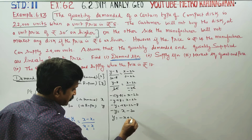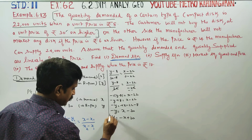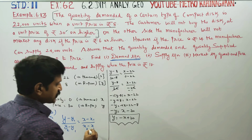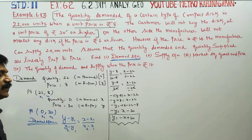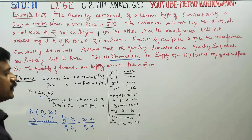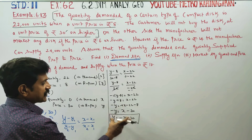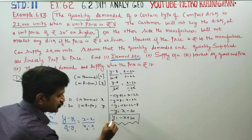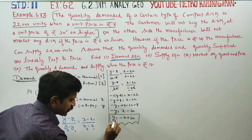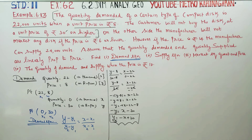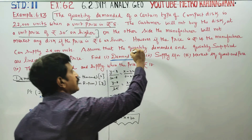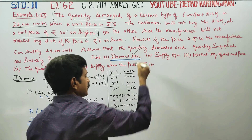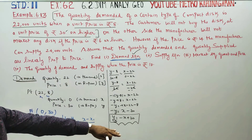Rearranging: -y = x - 30, therefore y = -x + 30. This is the demand equation, also called the demand function.